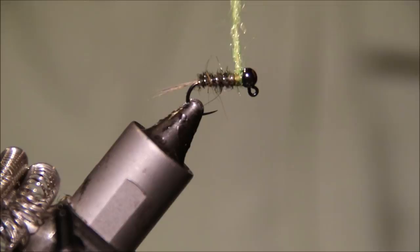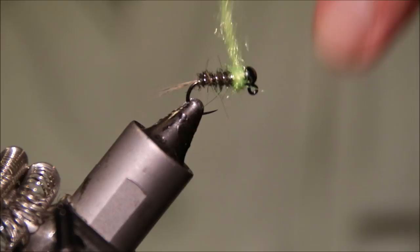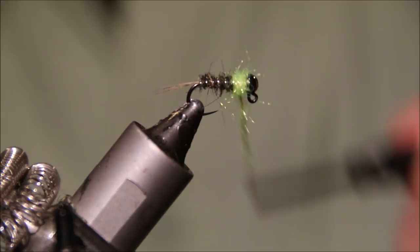And even though this will darken down when it's in the water over the dark thread, it will still fluoresce. And then I've got what appears to be quite a lot of dubbing here, but I've just got to keep winding it on quite tight.